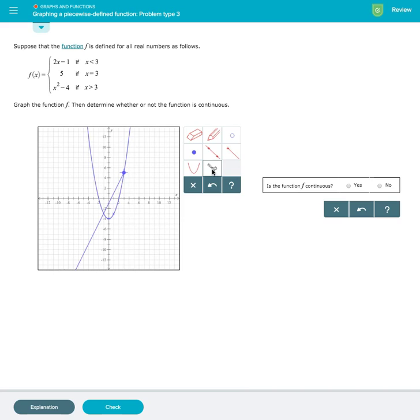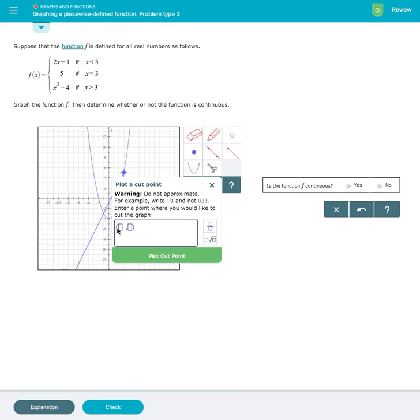To do this, we click on the cutting tool. And we want to plot our cut point. Here we will plot our cut point at 3, 5, which is the point where you have set up. So we'll type 3, 5 in here and plot that point.